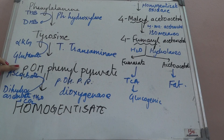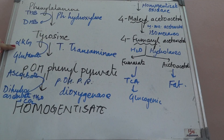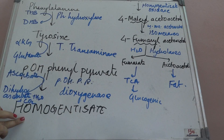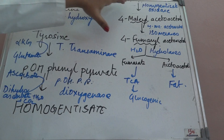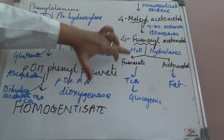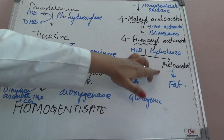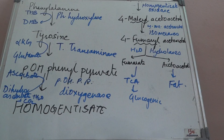In summary: phenylalanine forms tyrosine through phenylalanine hydroxylase. Tyrosine forms parahydroxyphenylpyruvate via transamination. Parahydroxyphenylpyruvate forms homogentisate in the presence of dioxygenase and ascorbate. Homogentisate forms 4-maleylacetoacetate via homogentisate oxidase. This isomerizes to 4-fumarylacetoacetate, which splits into fumarate — entering the TCA cycle — and acetoacetate — going into fat metabolism. So this is the complete pathway.